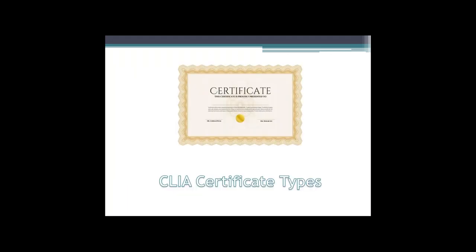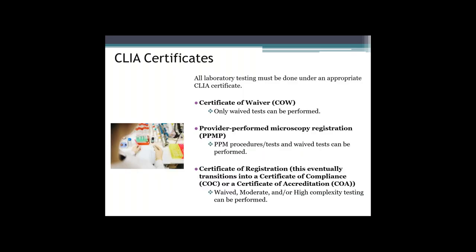Based on the complexity of testing performed in a particular lab, you need to have a CLIA certificate that supports that level of testing. Once we determine the level of testing at a particular site, we apply for a CLIA certificate. Each certificate has a fee schedule, which is dependent on the number of test specialties, test complexity level, and test volume performed by the holder of the certificate. The lower the complexity, the lower the cost of the certificate. A Certificate of Waiver, or COW, is what is obtained if a facility performs waived tests only.